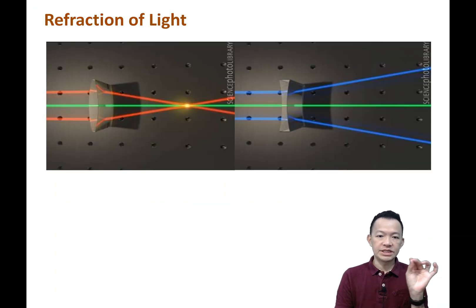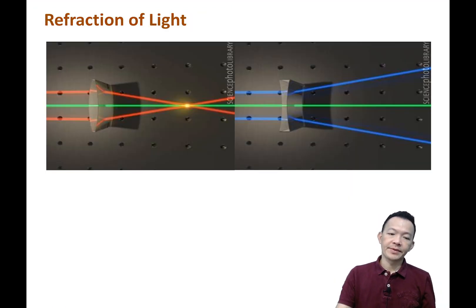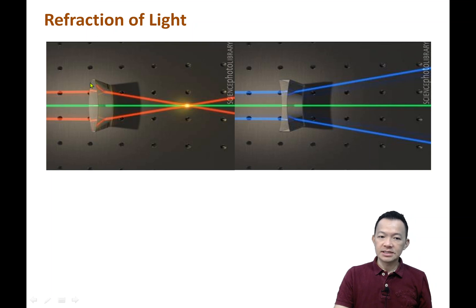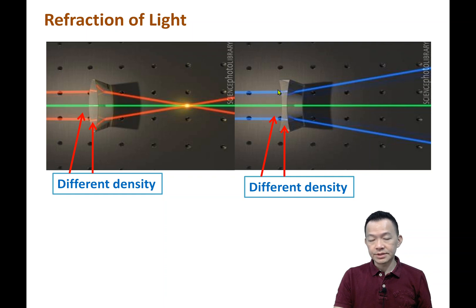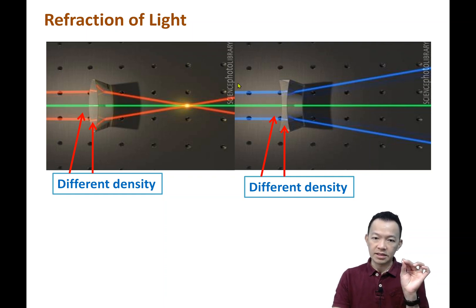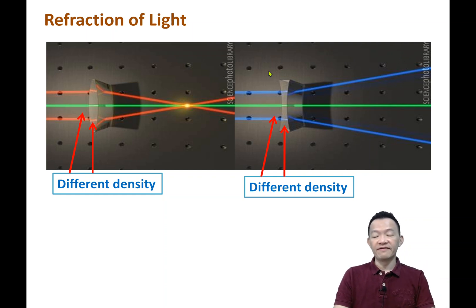Why is it like this? I'll show you the diagram. So this is the air and this is the glass. Grass and the air are having different density, they're not the same. So when the light travels from one medium and enters another medium with different density, the light is going to bend — this is what we call the deflection of light.